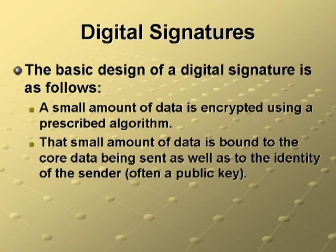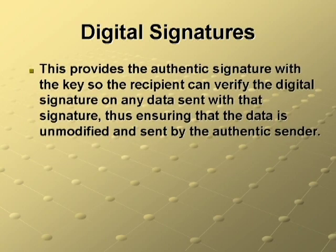The basic design of a digital signature is as follows. A small amount of data is encrypted using a prescribed algorithm. This small amount of data is bound to the core data being sent as well as to the identity of the sender, which may often be a public key. This provides the authentic signature with the key so the recipient can verify the digital signature on any data sent with that signature, thus ensuring that the data is unmodified and sent by the authentic sender.